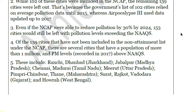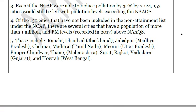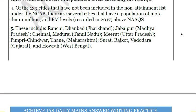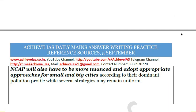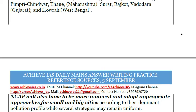Some of the 139 cities not covered by NCAP have populations exceeding one million, including cities like Ranchi, Dhanbad, Jabalpur, Chennai, Madurai, and Meerut — spread across India. However, a balanced view recognizes that at least a step has been taken in the right direction. The conclusion is that the National Clean Air Program will need to be more nuanced and adopt approaches suited to both small and big cities according to their dominant pollution profile, while some strategies may remain uniform.